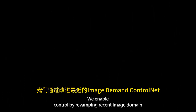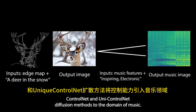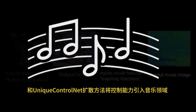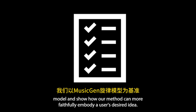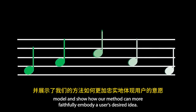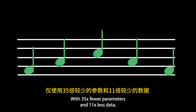We enable control by revamping recent image domain ControlNet and unique ControlNet diffusion methods to the domain of music. While few comparable methods exist, we benchmark against the MusicGen melody model and show how our method can more faithfully embody a user's desired idea with 35 times fewer parameters and 11 times less data.